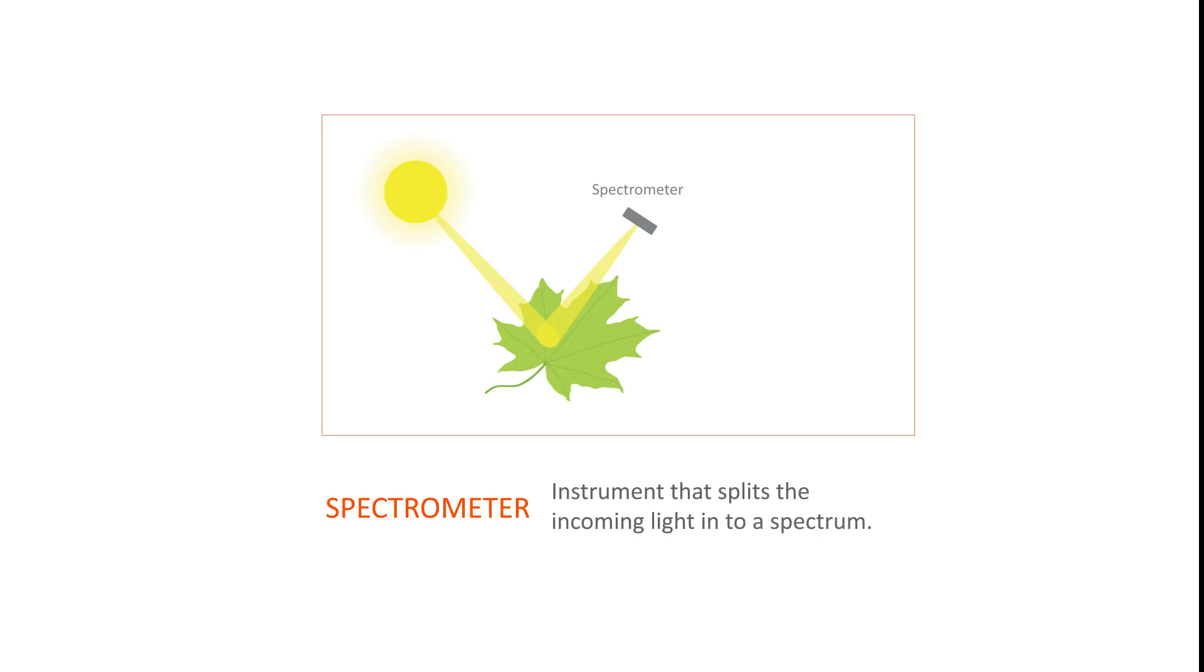Let's examine the reflected light in more detail. To study the light, one needs an instrument called a spectrometer. It is an instrument that splits the incoming light into a spectrum.